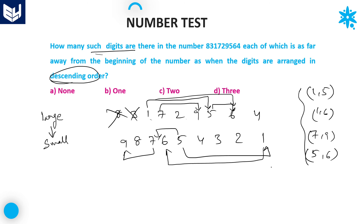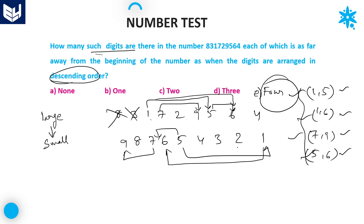The four pairs are: 1 and 5, 1 and 6, 7 and 9, and 5 and 6. So how many such digits — total 4. The answer is 4. Option E is the right answer, that is 4. Guys, I hope you enjoyed the session. Thank you very much for watching.